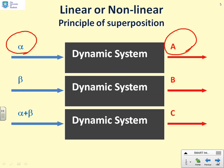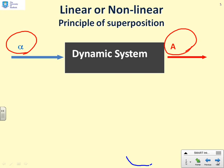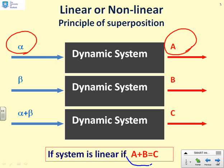Here's a key question. What is the definition of a linear system? Well, here's the definition. A system is linear if capital A plus capital B equals capital C.